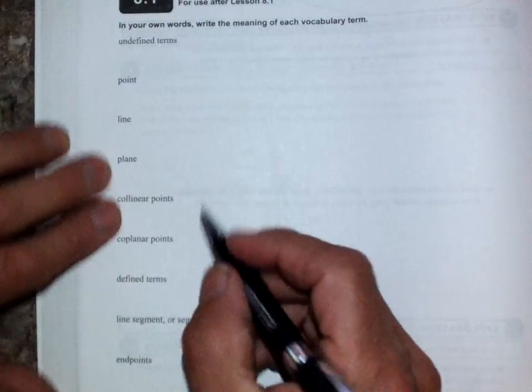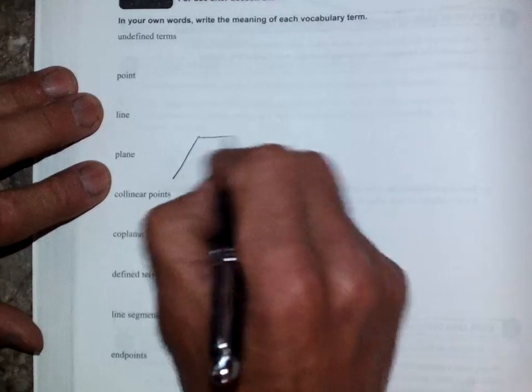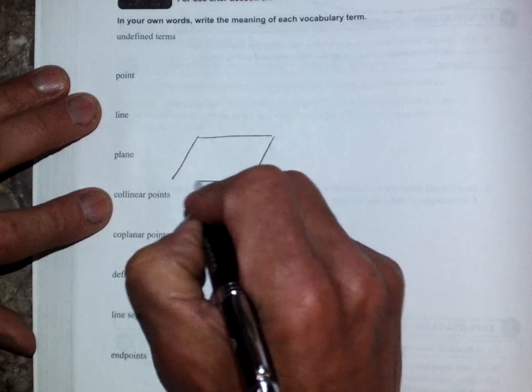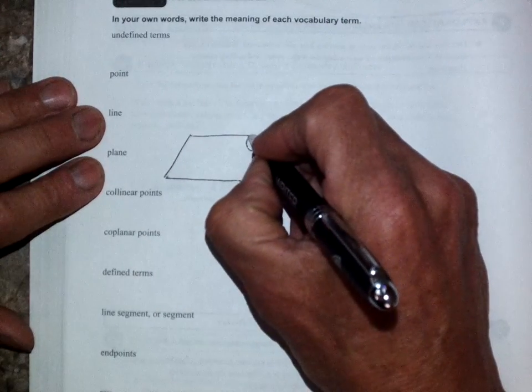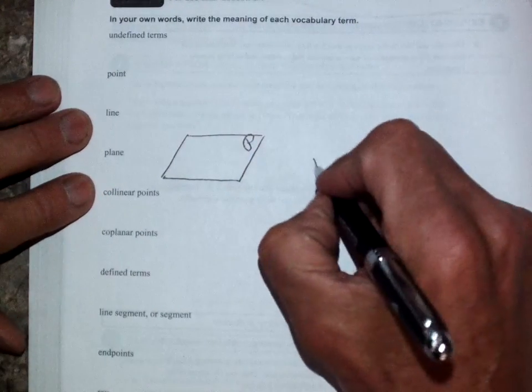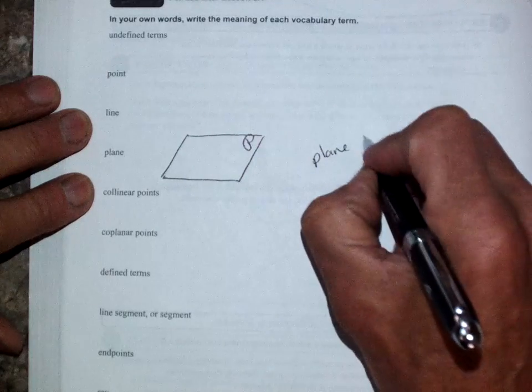Okay. Now, collinear. Let's go to this one. Okay. Collinear. Oh, I'm going to back up. Plane. So we draw a plane. We usually draw a plane. It's like a parallelogram. We label it normally with a cursive capital letter. So this would be plane P.